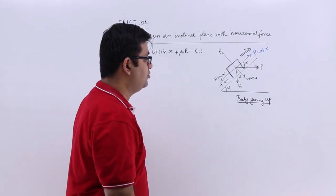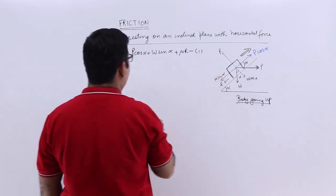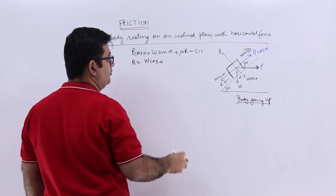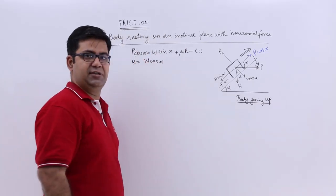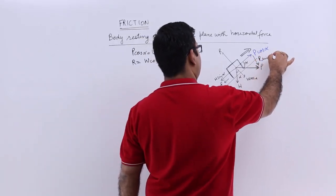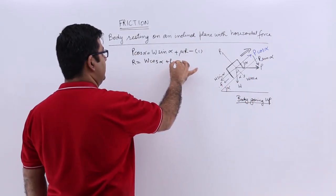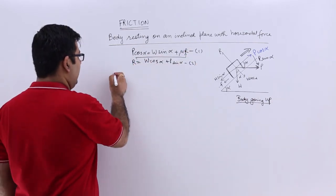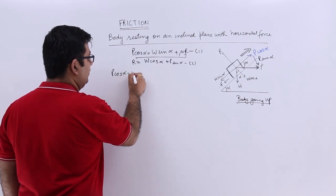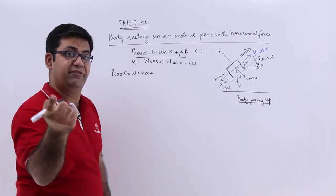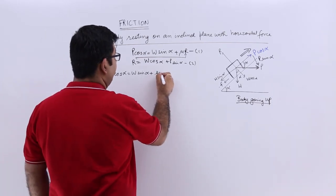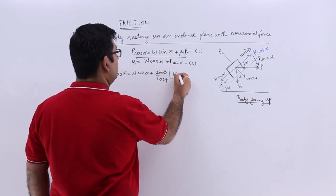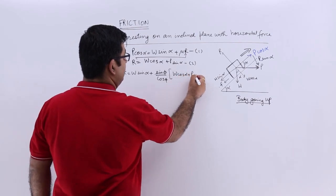Now resolving forces perpendicular to the plane: R equals W cos alpha plus P sin alpha — this is equation 2. Substituting into equation 1, we have P cos alpha equals W sin alpha plus tan phi, which is sin phi over cos phi, multiplied by R, which is W cos alpha plus P sin alpha.